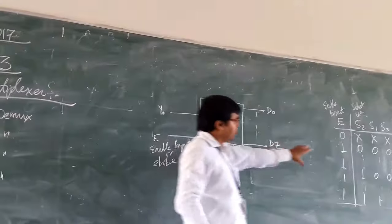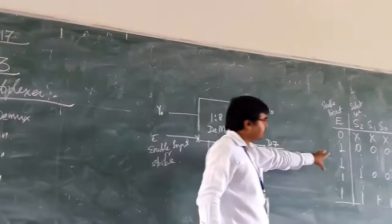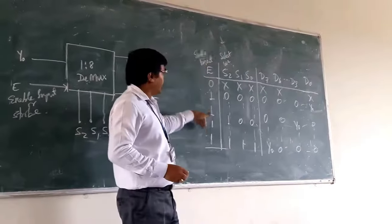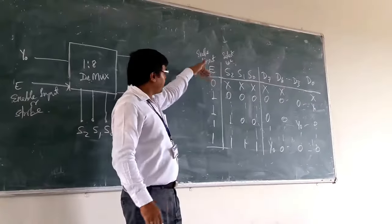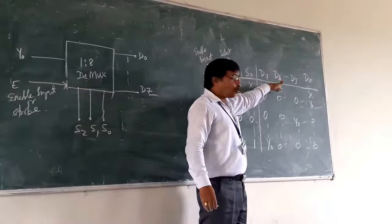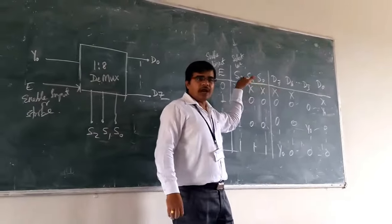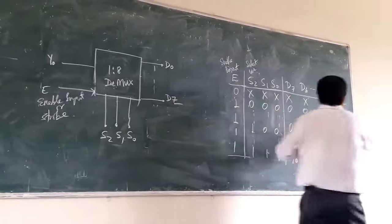Here you are going, this is the truth table of your 1 is to 8 demultiplexer. Here you are having the enable input. When enable input is 0, irrespective of what are the values you are having in the select line, you will not get any output.